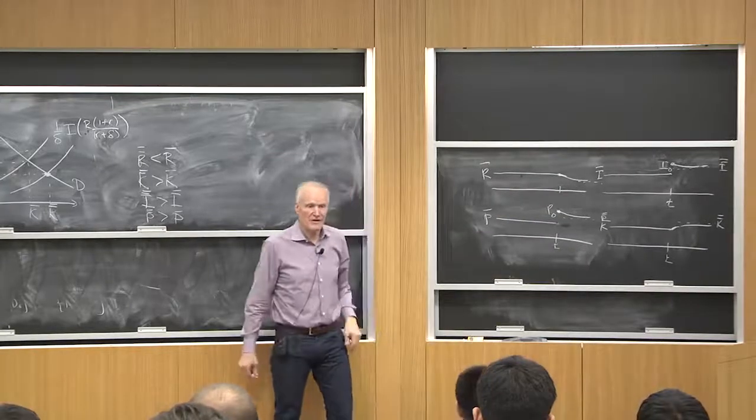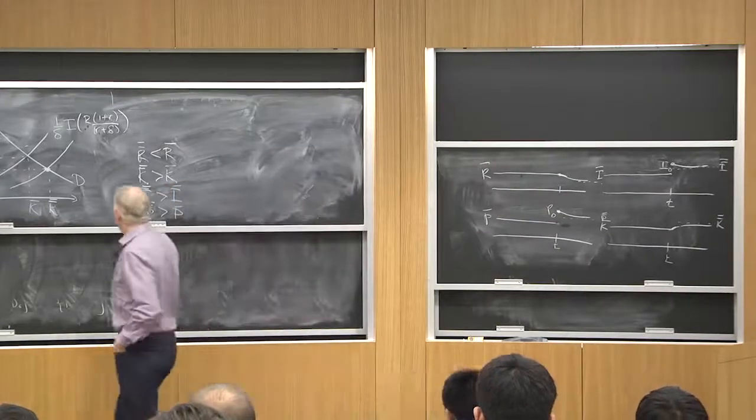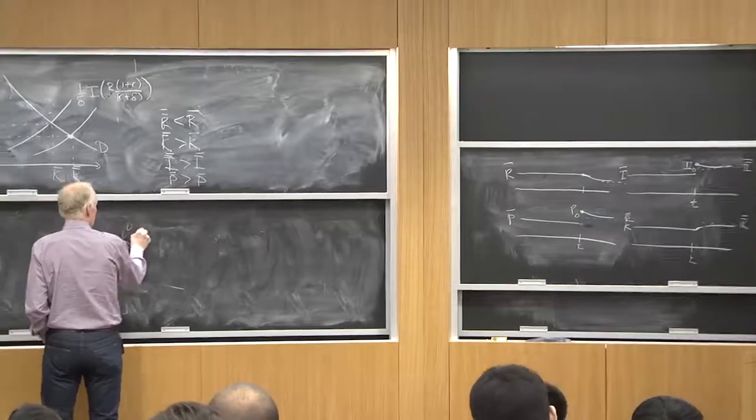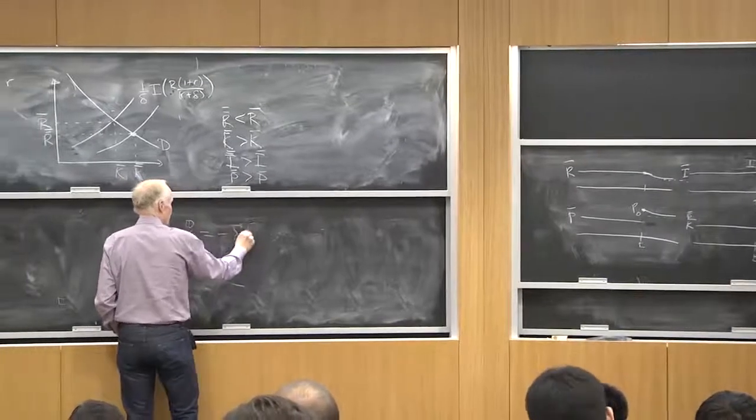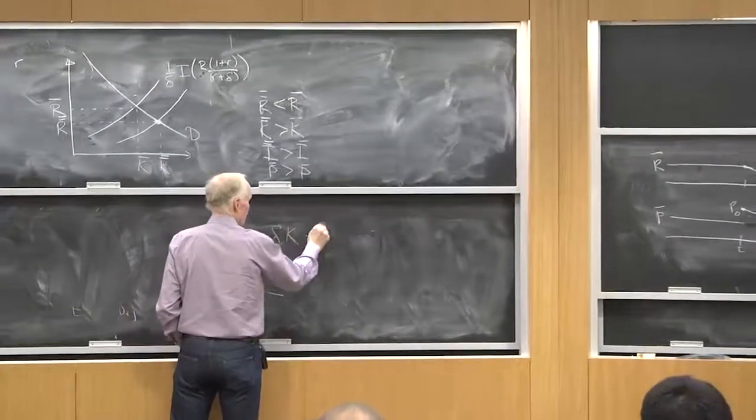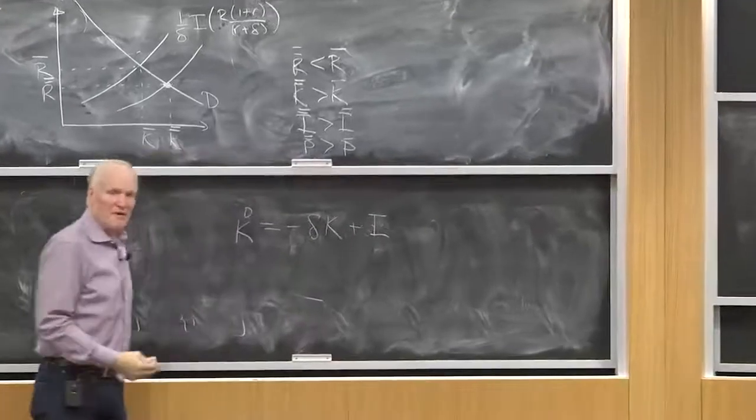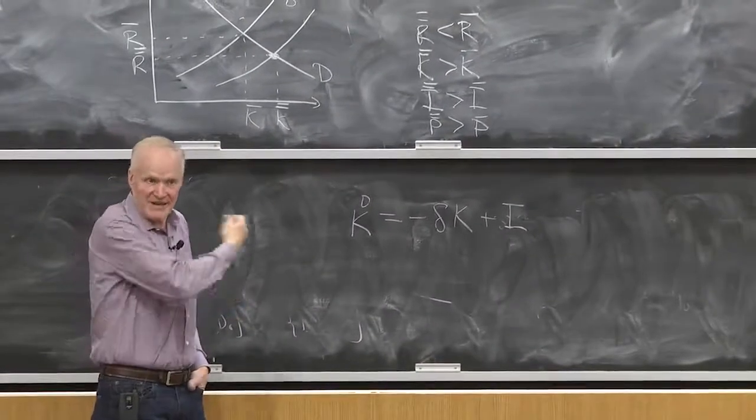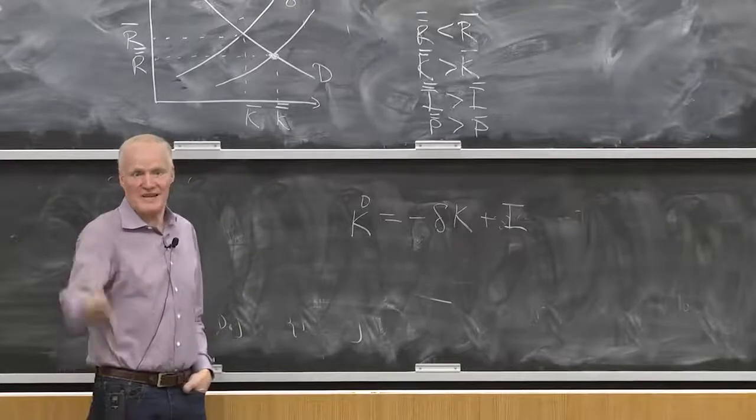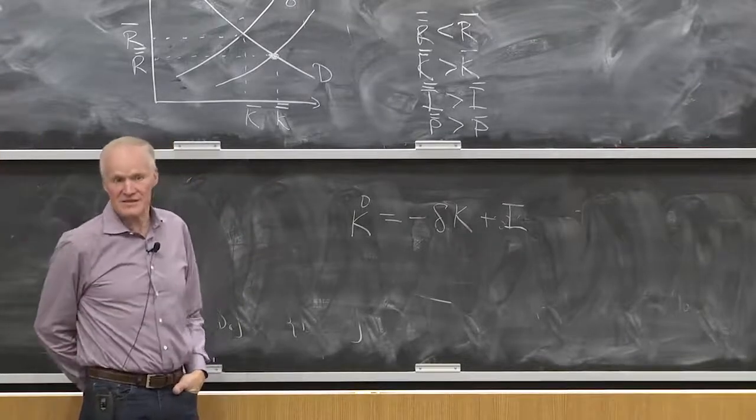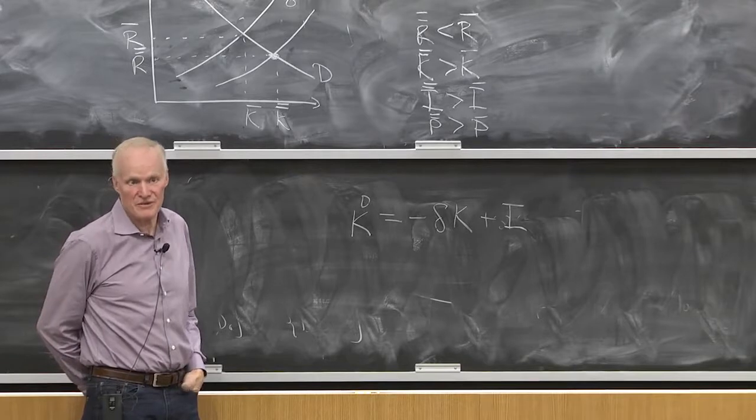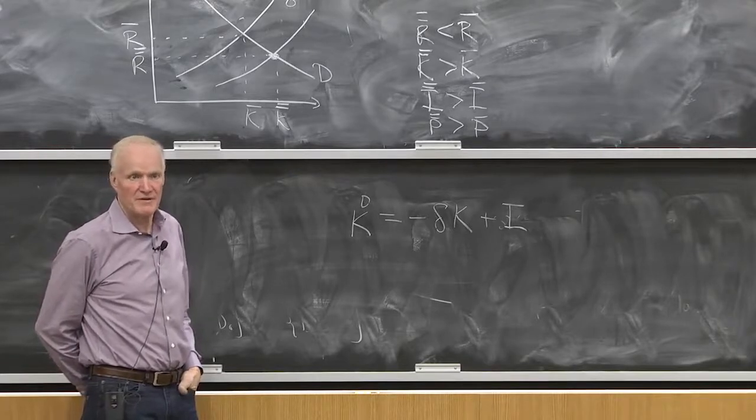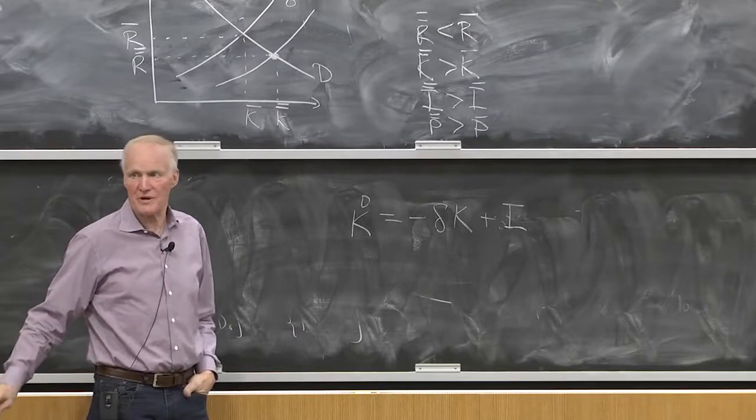Right? Because it's an equation. It's like k dot equals minus delta k plus I. Well, everybody knows, I mean, how do you solve that, that is a linear differential equation that has a solution that has like e to the minus delta t as the solution. So, it's going to converge at rate delta.